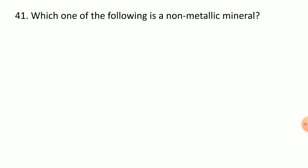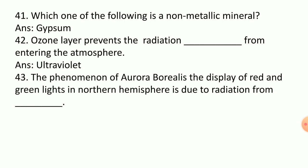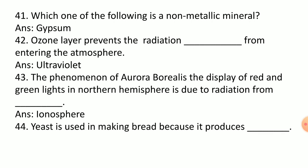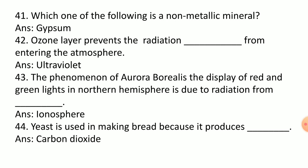Which one of the following is non-metallic mineral? Gypsum. Ozone layer prevents ultraviolet radiation from entering the atmosphere. The yeast is used in making bread because it produces carbon dioxide. Oasis is associated with desert.